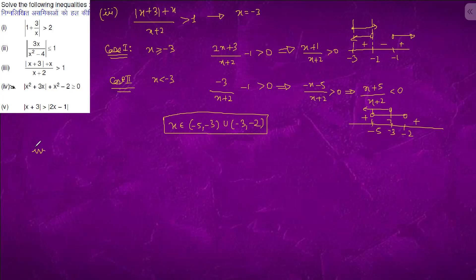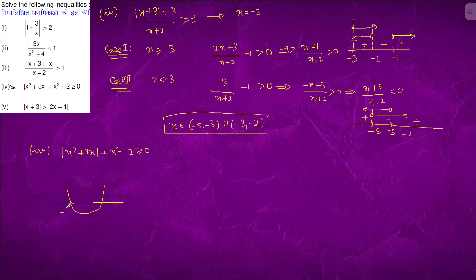We will proceed with question 4: x²+3x + |x²-2| ≥ 0. We will first draw a graph. It looks like this: with key points at -3 and 0. Between -3 and 0 we have the negative part, which gives the modulus shape.